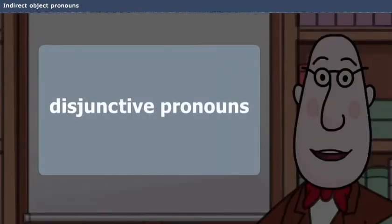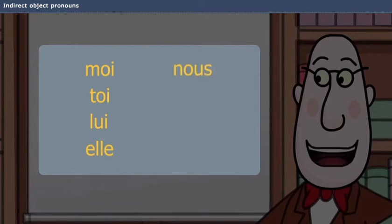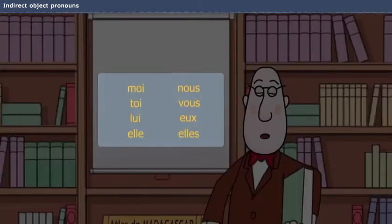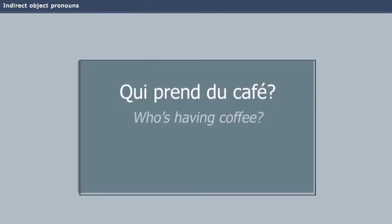Disjunctive pronouns — remember them? Moi, toi, lui, elle, nous, vous, eux, elles. You know that disjunctive pronouns are used after prepositions. Well, they can also be used alone without a verb. Qui prend du café? Moi.